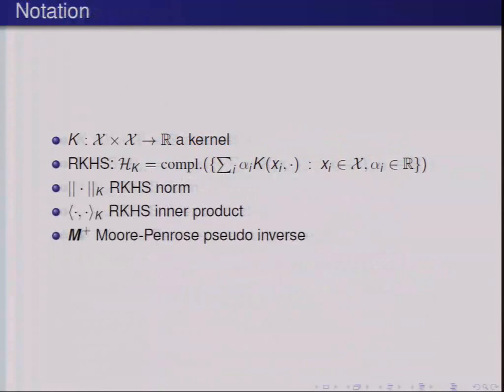Just a bit of notation: if we have a kernel on our space X, we define the RKHS in the normal way, with the inner product and norm subscripted by K. And this is how I define the pseudo-inverse of a matrix.